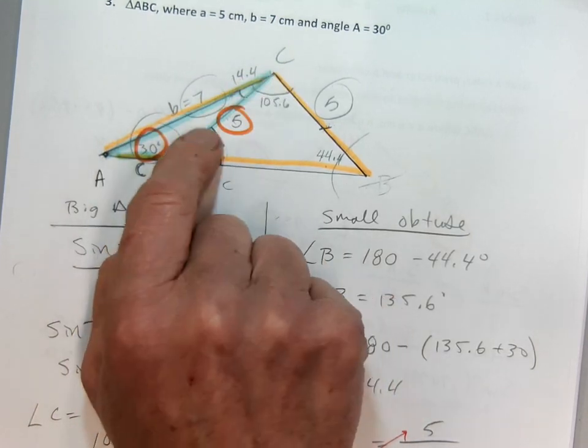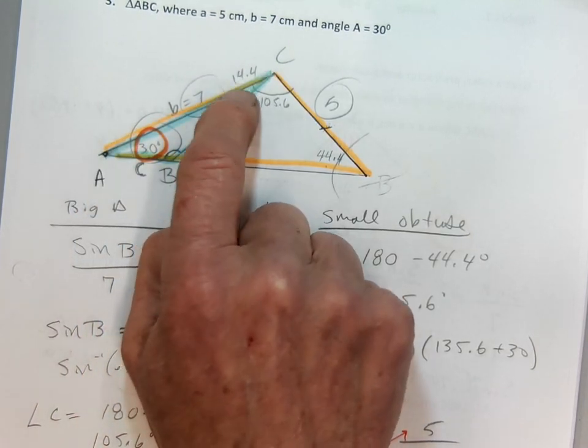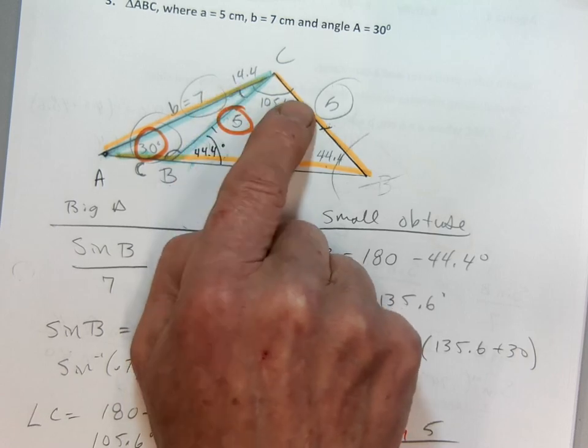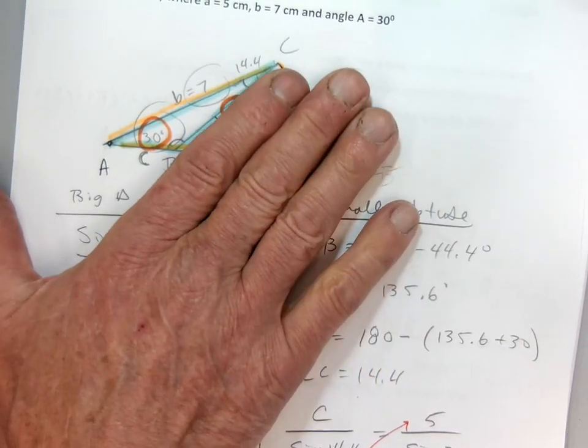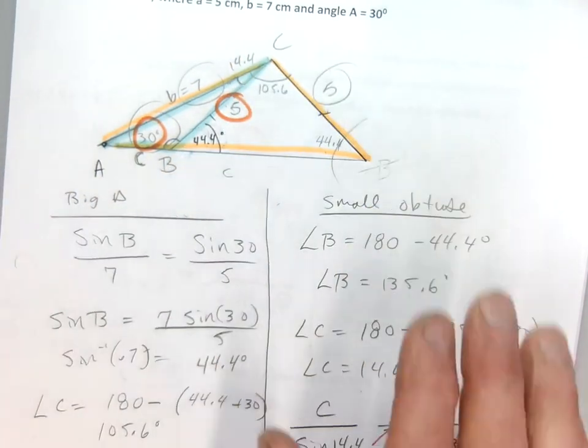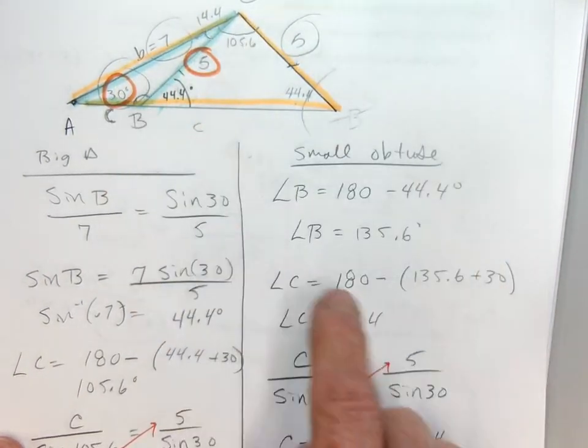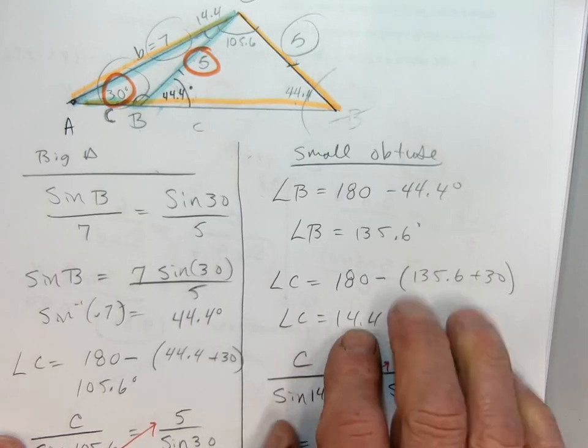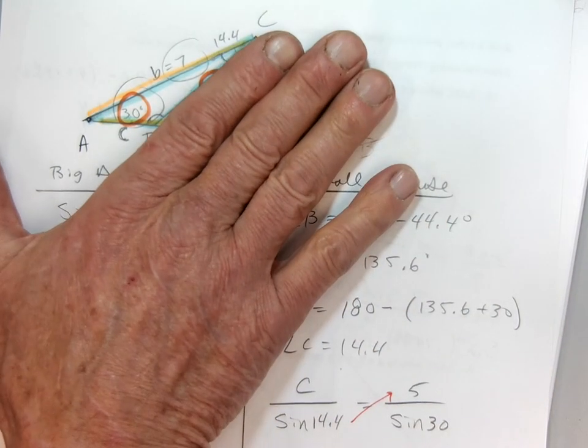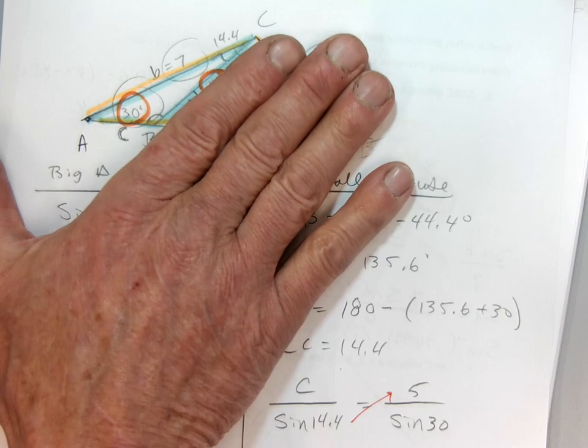Again, this small little blue triangle, this angle C is no longer 105.6. It's little. But still 180 degrees in a triangle. So I found angle C by 180 minus my two remote angles. And I got 14.4. So angle C is 14.4. Now I'm getting there.